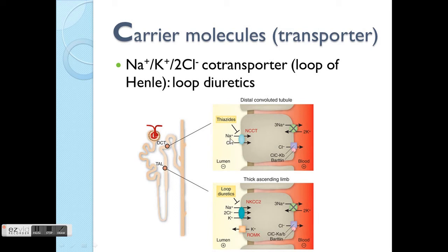There are co-transporters here, meaning ions can be transported together in the same direction — from outside to inside the cells. There are two main drug groups: thiazides and loop diuretics. Both cause increased water excretion from the body. Thiazides inhibit the sodium/chloride co-transporter, so less sodium is reabsorbed, causing more sodium to be excreted.